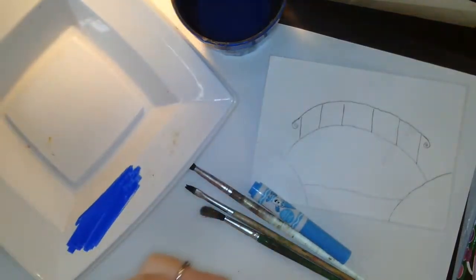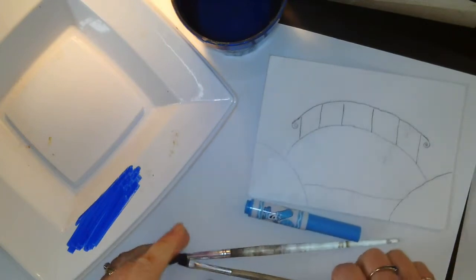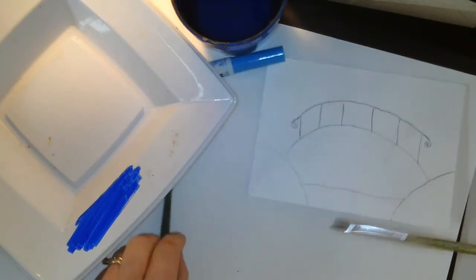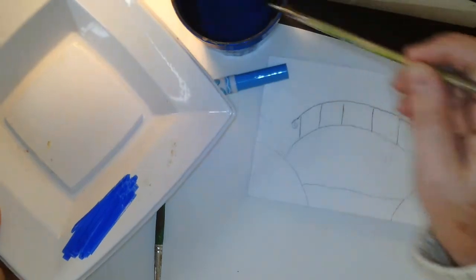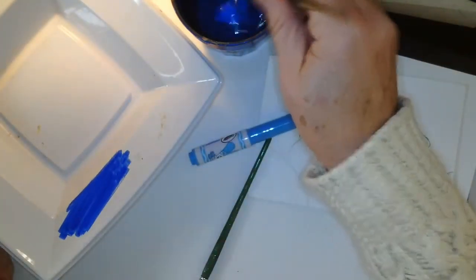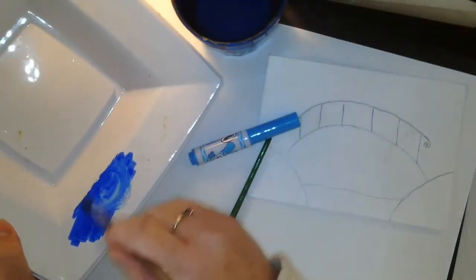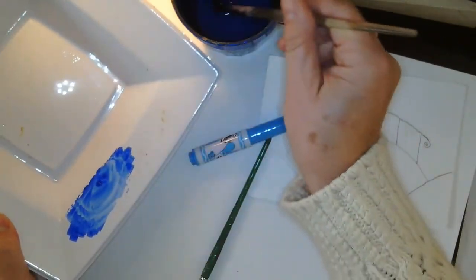Then what I'm going to do is I'm going to take my paintbrush and I am going to dip it in the water, and I'm going to activate my paint. See, it becomes paint by adding a little bit of water.